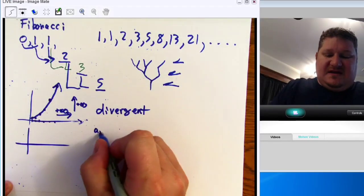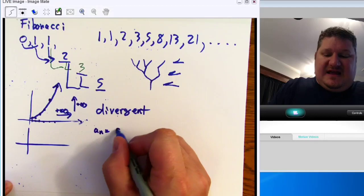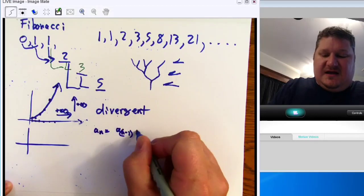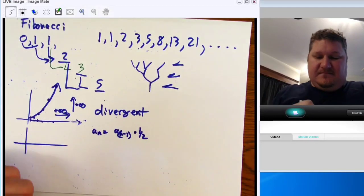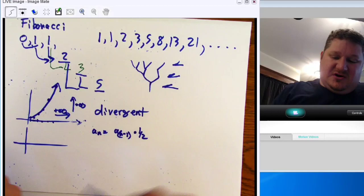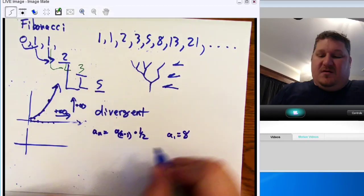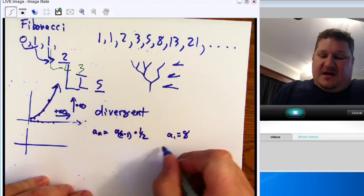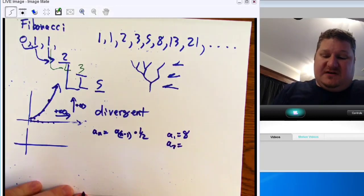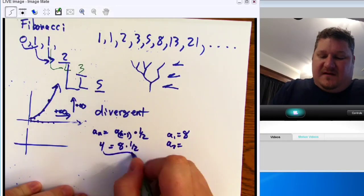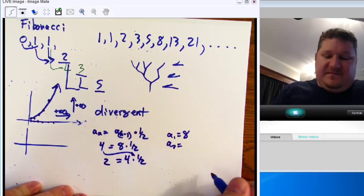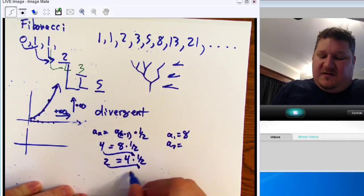Let's take one where a sub n equals a sub n minus 1 times 1 half. Well, let's start with a nice big number. Let's start with a sub 1 equals 8. Well, that means a sub 2 is going to equal what? Well, I have 8 times 1 half equals 4. Bring this down and I say 4 times 1 half equals 2. Bring this down. 2 times 1 half equals 1.